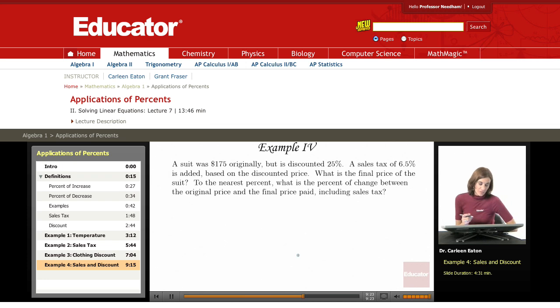A suit was $175 originally but is discounted 25%. A sales tax of 6.5% is added based on the discounted price. What is the final price of the suit? To the nearest percent, what is the percent of change between the original price and the final price paid, including sales tax?